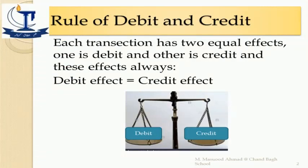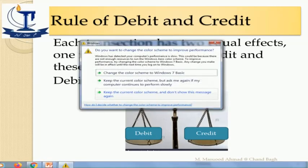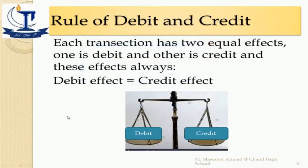Every financial transaction which occurs in a business has two equal effects — one is debit and the other is credit — and these effects always have the same value. The debit effect is always equal to the credit effect. Through this picture you can see that both effects, if held on a wing scale, left and right are equal.